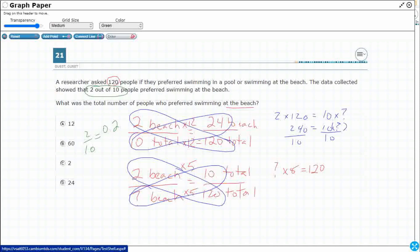And that's the amount of people that liked the beach. So what I could do is I could actually multiply that by my total people. 0.2. And multiply that.